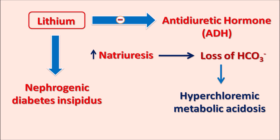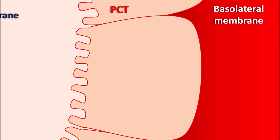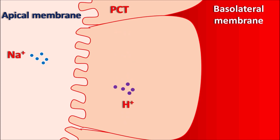Now let us see how lithium produces hyponatremia and diabetes insipidus. At the proximal convoluted tubule, the basolateral membrane and apical membrane (the inner membrane of the lumen) are involved. Sodium present in the filtrate is reabsorbed at the proximal convoluted tubule at the apical membrane via a sodium-proton exchange pump, through which sodium enters the renal tubules in exchange for protons.